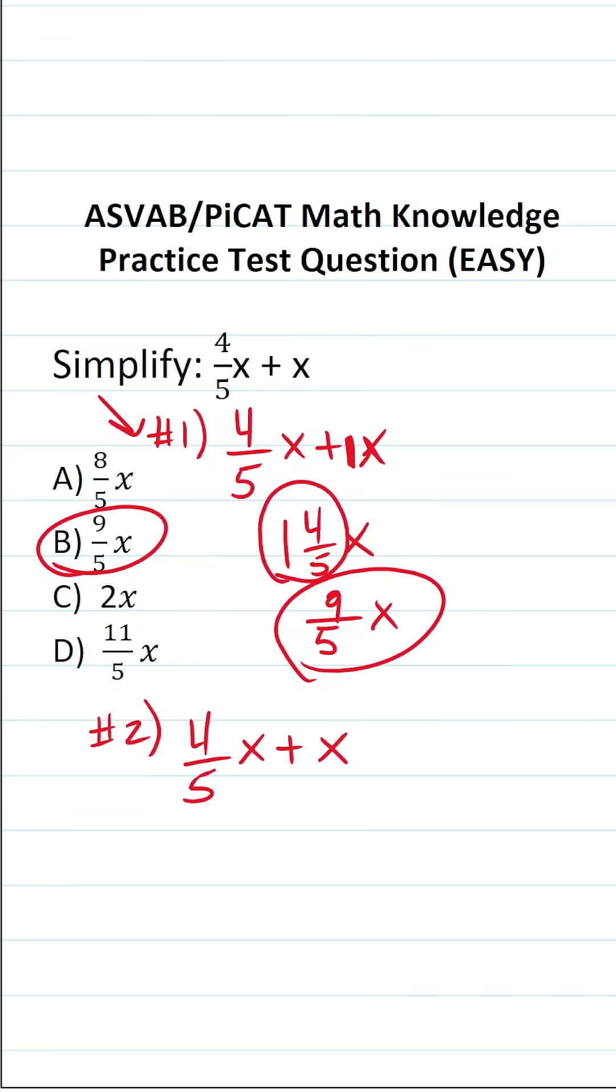Now, here's the other way to solve this one. Again, we have to realize that there's a one in front of this x. And now we want to view this one as adding fractions. To add fractions, they have to have the same or a common denominator.